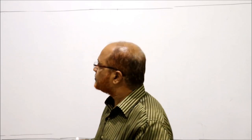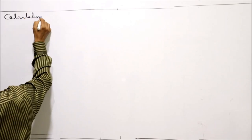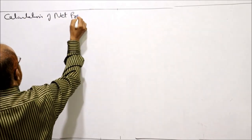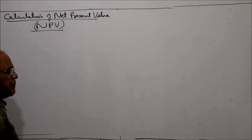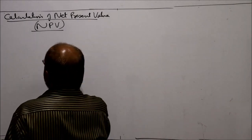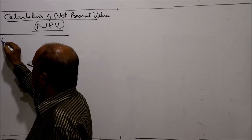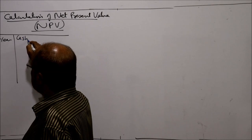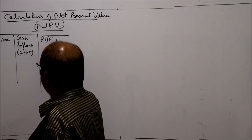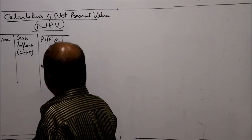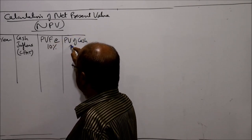For NPV calculation we need two things: Present Value of Cash Inflows and Present Value of Cash Outflows. The present value of cash outflow (Rs. 2,00,000) is given directly. We set up columns: Year, Cash Inflows (CFAT), Present Value Factors at 10%, and Present Value of Cash Inflows.